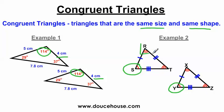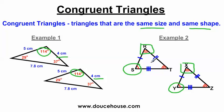If I look at angle R, it has two arcs, and angle X also has two arcs. Since they each have two arcs, these two angles are congruent. So just keep in mind we don't always use numbers to indicate sides and angles are congruent — sometimes we use tick marks and arcs.